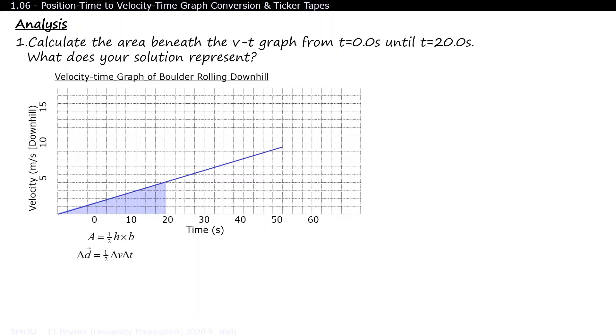Just keep in mind that the height is not measured in meters, but in meters per second. So 1 half times 4 meters per second times 20 seconds equals 40 meters downhill.